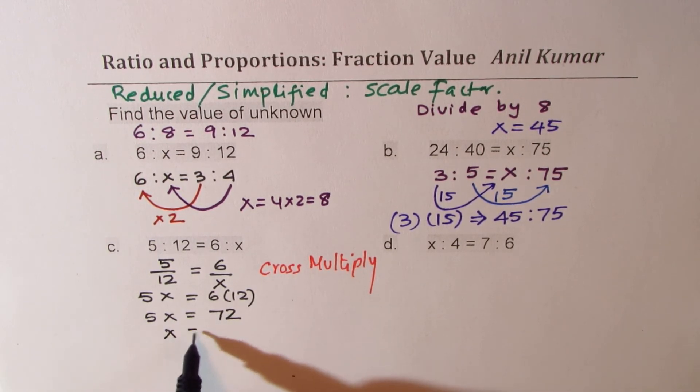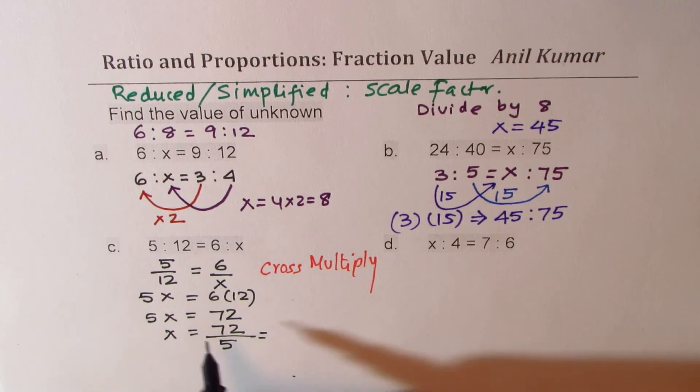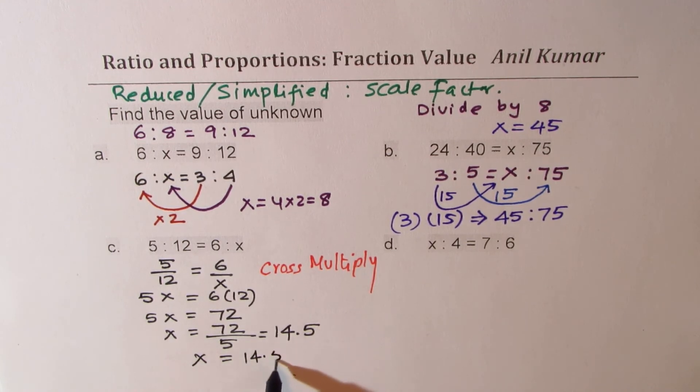And now x is equal to 72 divided by 5. So we get a value of x which is in decimals. So 5 goes 1 times and then 22. So 5 times 4 is 20 and 0.5. So we get a value of x which is equal to 14.5, a decimal value.